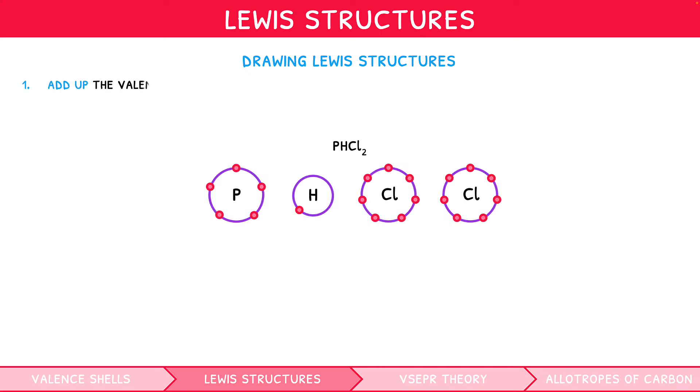First, add up the valence shell electrons for all the atoms in the compound, including any charge present, and divide this number by 2 to find the number of electron pairs. Here, 5 for phosphorus, plus 1 for hydrogen, plus 2 times 7 for the chlorines, divided by 2, which gives 10. This is the number of lines we may use for our Lewis structure.